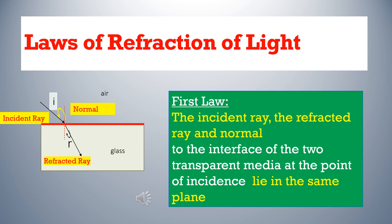Same as the case of reflection of light, there are two laws of refraction of light. The first law states that the incident ray, refracted ray, and normal lie in the same plane. More precisely, the normal to the interface of the two transparent media at the point of incidence – so the incident ray, refracted ray, and normal to the interface of the two transparent media at the point of incidence all lie in the same plane.